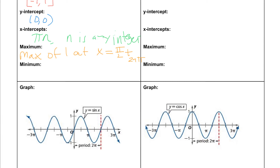n can be 1, negative 1, 2, negative 2, 8, 10 — whatever we want — which means we take π/2 and continue to add 2π as we go in either direction.